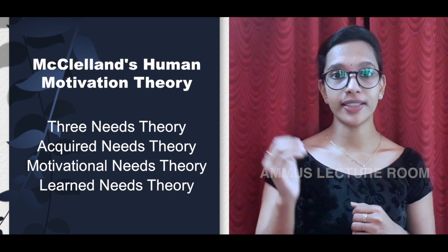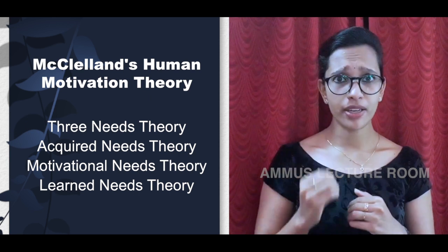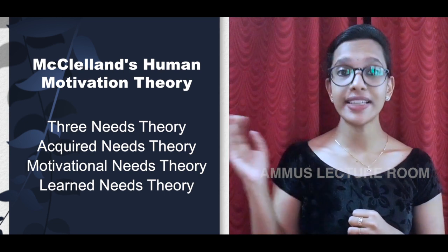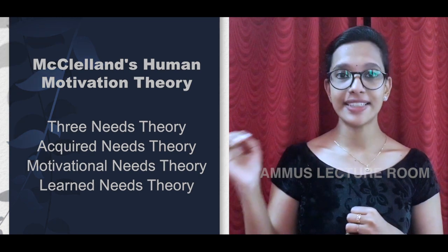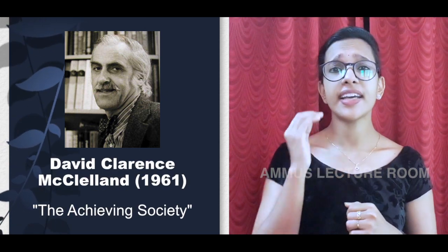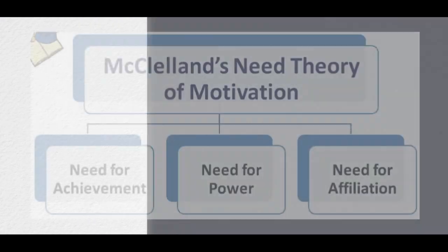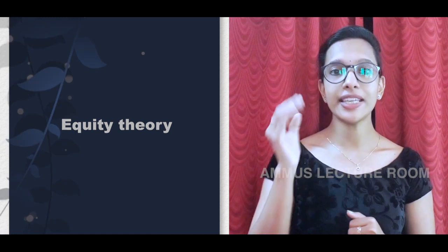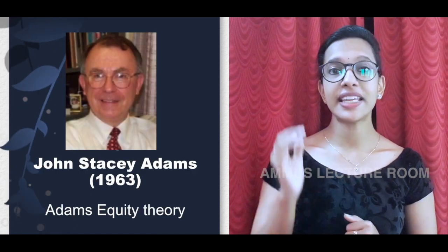McClelland's Human Motivation Theory identifies three acquired, motivational, or learned needs. Introduced in his 1961 book 'The Achieving Society,' the theory states that human beings are motivated by three factors: need for achievement, need for affiliation, and need for power.